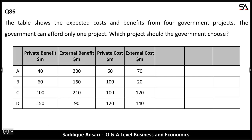Next: the table shows the expected costs and benefits from four government projects. The government can afford only one project. Which project should the government choose? Private benefit, external benefit, private cost, and external cost are given for four options A, B, C, D. In cost-benefit analysis, the government considers social cost and social benefit and tries to maximize net social benefit.